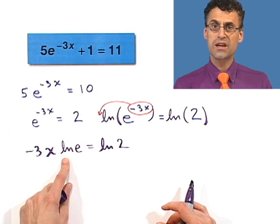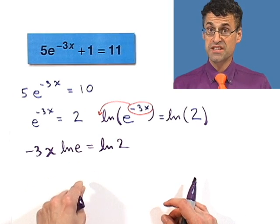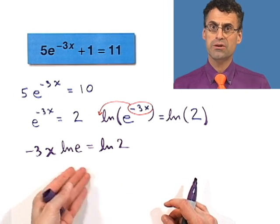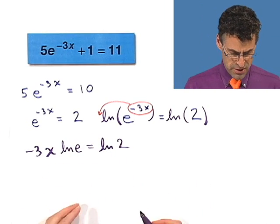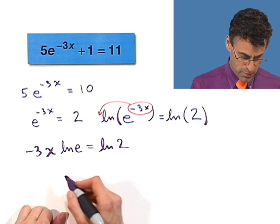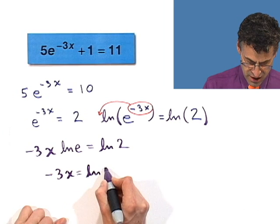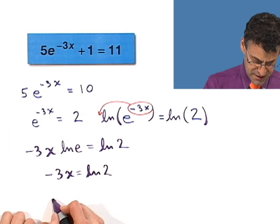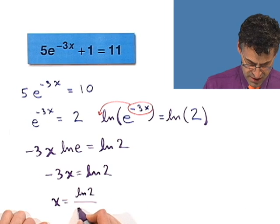But natural log of e, we know, because that's the log base e of e. So what's the exponent I have to raise e to in order to equal e? Well it's the first power, so it's 1. So this is just 1. And that's the beauty of doing this. The x is down below where I want it, and that just goes away, so I get 1. So I see negative 3x equals natural log of 2. And I can solve for x, x equals natural log of 2 divided by negative 3.